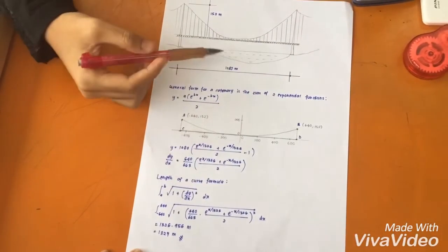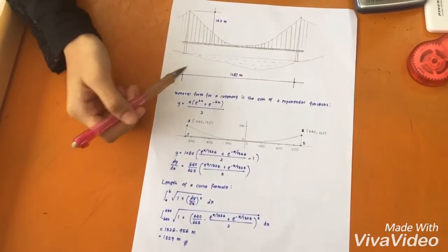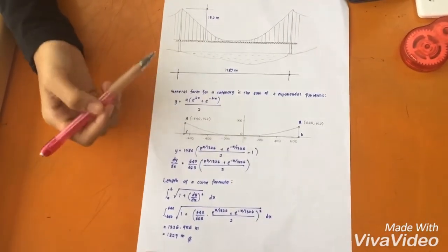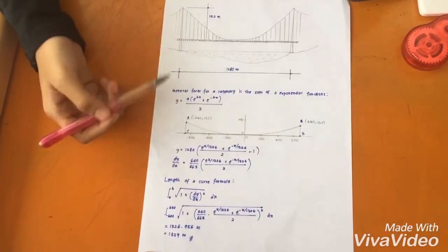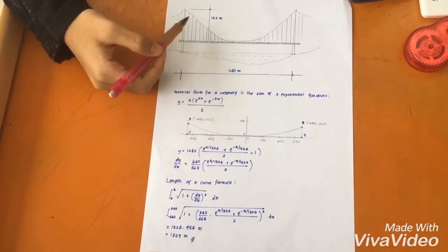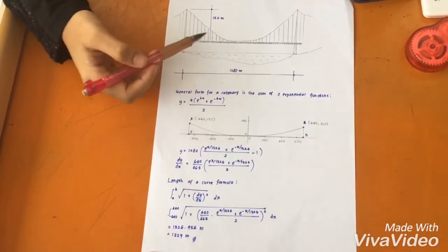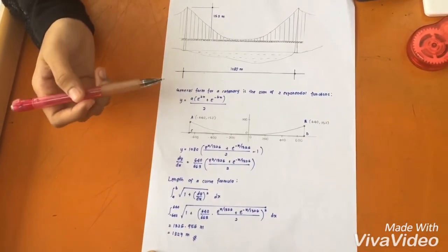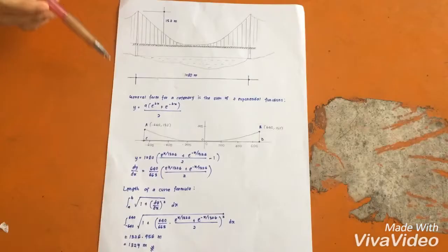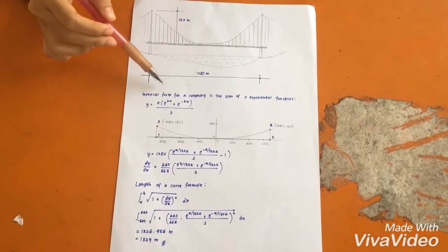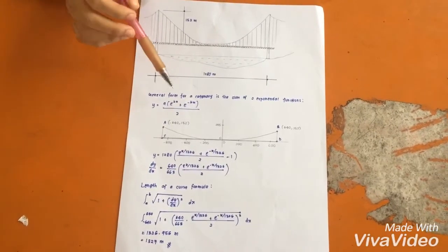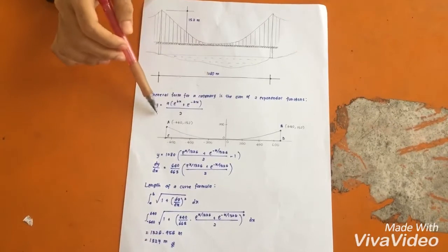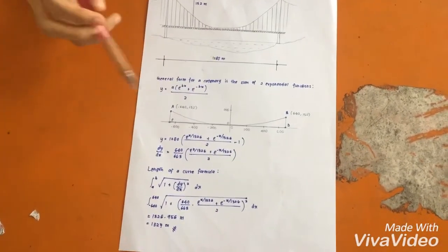So we want to find the length of the arc. First, we need to model the curve and find an equation that represents the curve accurately. This is a fairly hanging cable that takes the form of a catenary. Catenary is like a cable. The general form for a catenary is the sum of two exponential functions. This is the formula for the catenary.